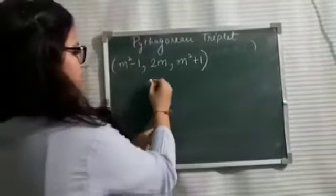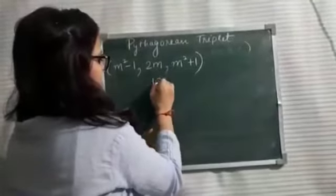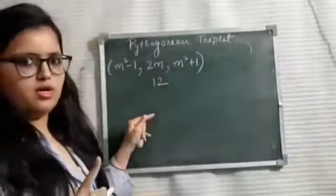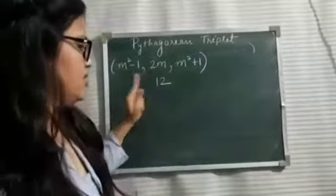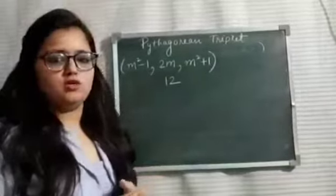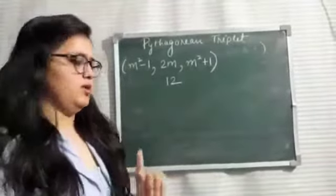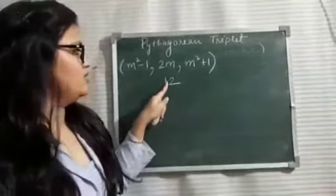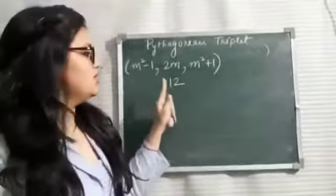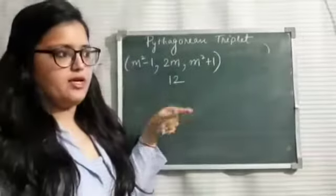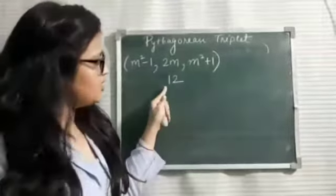Now, for example, it is given that one member of the Pythagorean triplet is 12. In all the questions, one member will be given. Suppose one of the members of Pythagorean triplet is 12 and you have to find out the remaining two members of Pythagorean triplet.